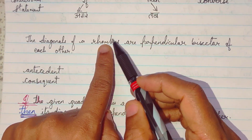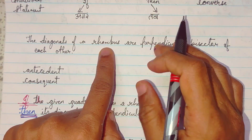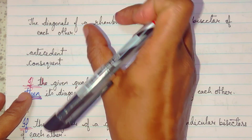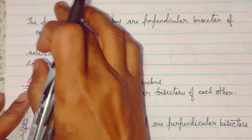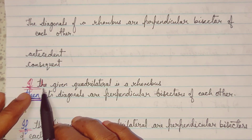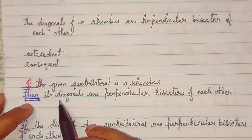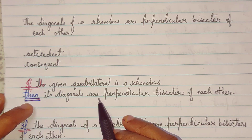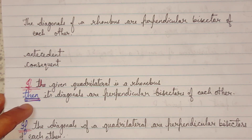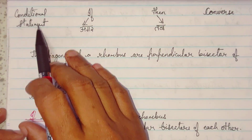Here they are talking about a rhombus, and the diagonals being perpendicular bisectors of each other. So, to change this simple statement into a conditional statement: if the given quadrilateral is a rhombus, then its diagonals are perpendicular bisectors of each other. A simple statement has been changed into if-then form — that is a conditional statement.